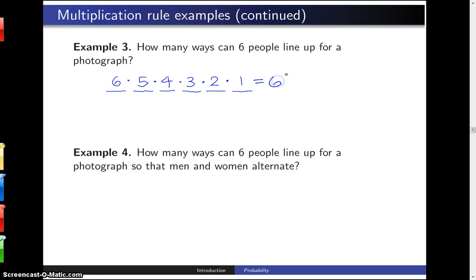So the answer is six factorial, which works out to 720 different ways to line up six people for a photograph.